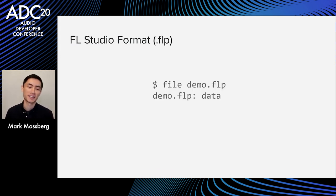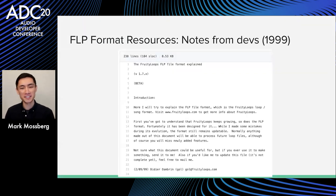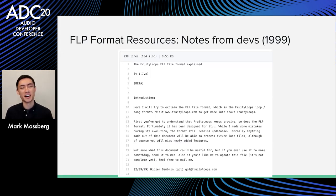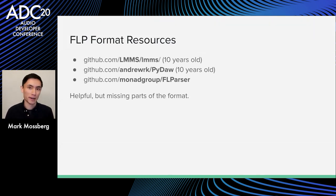FL Studio files (.flp) are not XML — they're a real binary format: raw, binary, not human readable, technically not documented. There is an interesting text file that's been floating around the internet for about 20 years, apparently from the creator of FL Studio, that explains quite a bit of the format — but it's very old and missing a lot of newer parts. There are also some GitHub projects for parsing FLPs, but most are old and incomplete, so we still need to reverse engineer the parts we need.